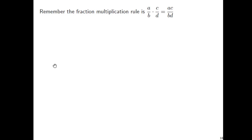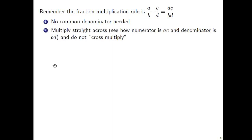Remember fraction multiplication: multiply straight across. No common denominator is needed at all. Trying to get one often leads to errors, and it also often leads to much, much bigger work — very large denominators. Just multiply straight across.